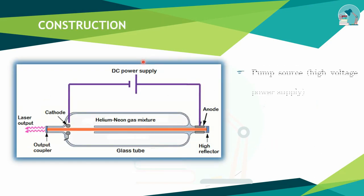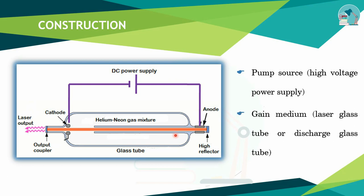The Helium-Neon laser construction has three parts. First is the power supply, which provides electrical energy to excite the gas. The gain medium is a glass tube filled with the gas mixture. The resonating cavity consists of a high reflector mirror on one end and a partial reflector (output coupler) on the other end, from which the laser output emerges.